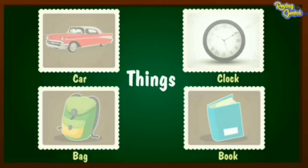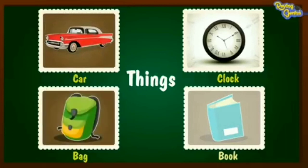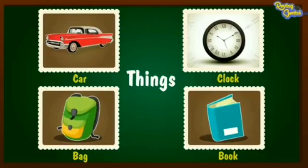And the last one is the names of things. All these are non-living things: car, clock, bag, book. And some other examples are glass, pen, pencil, flower, etc.